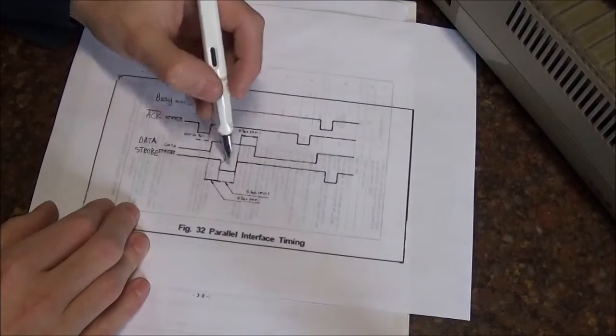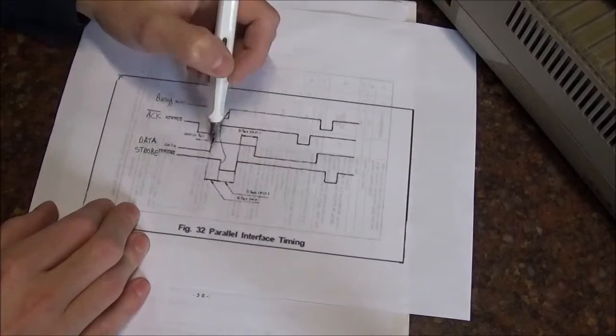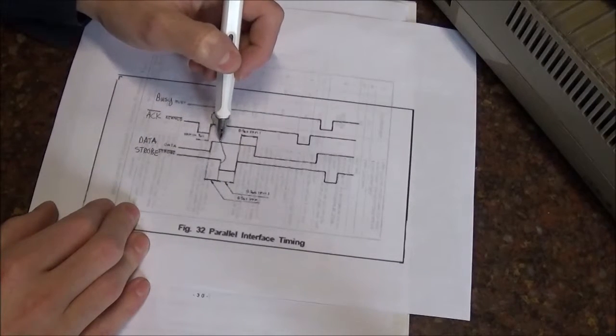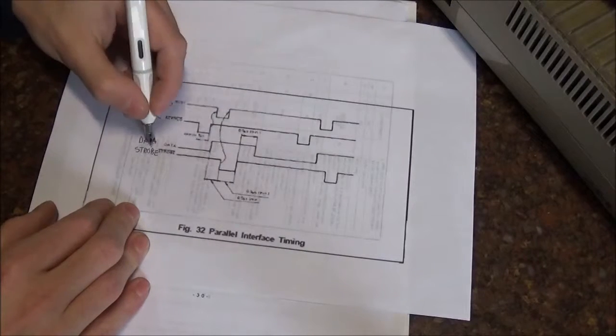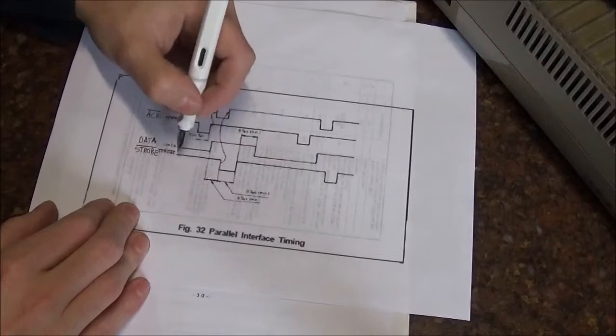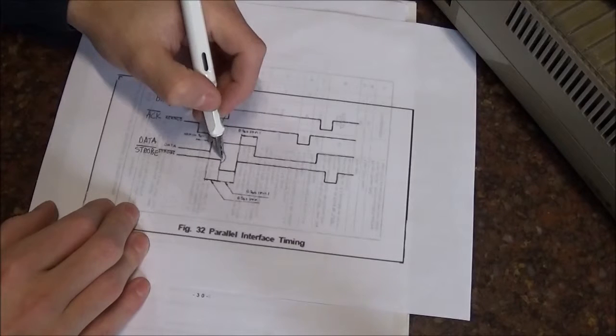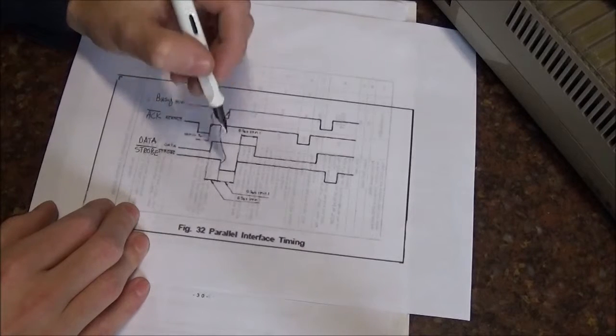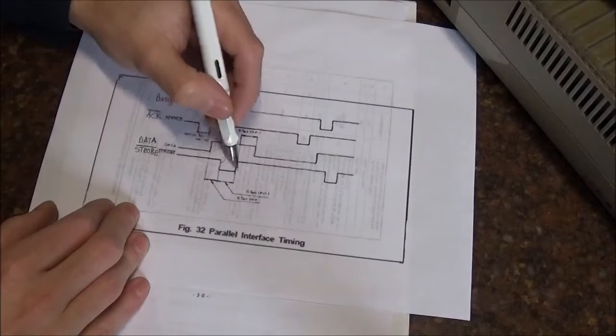Which they list, again it's very hard to read, as 0.5 microseconds. This is the time that the data must be asserted for before the strobe takes place. Strobe itself is also an inverted signal. That means when strobe is 1, we don't want anything to happen. And when we toggle strobe downwards, that's when we want something to happen. So this is the action zone here, when strobe is low.